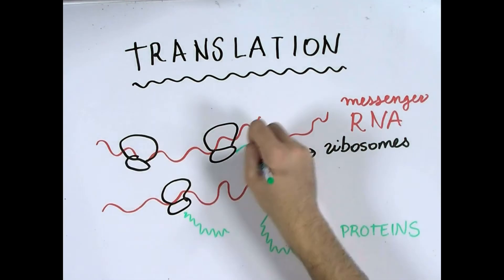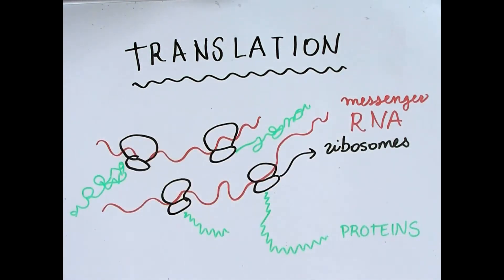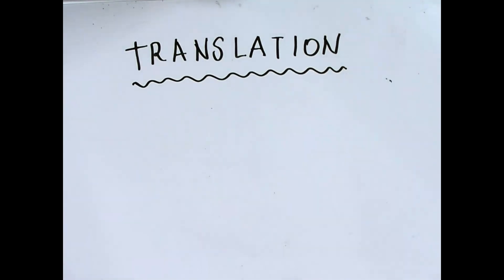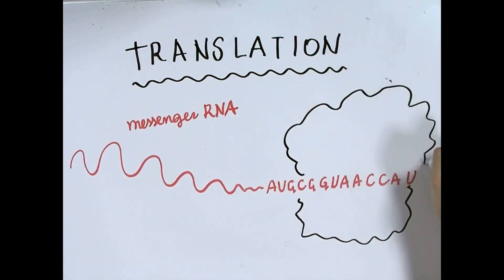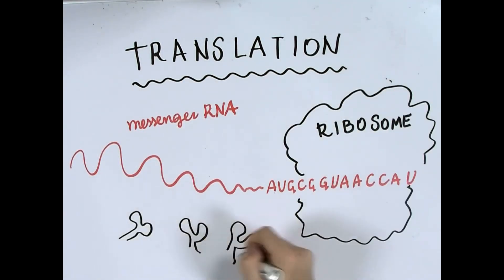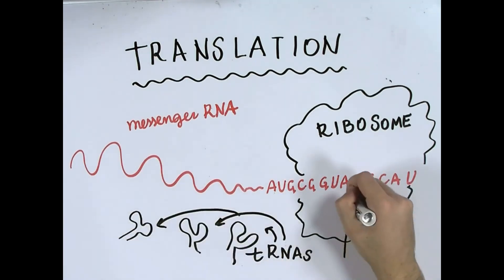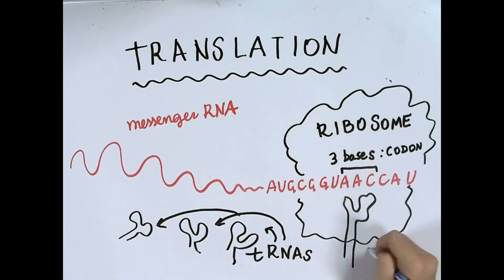Ribosomes help to decode an mRNA sequence by inducing the binding of specific molecules known as tRNAs with complementary anticodon sequences to that of mRNA. A codon is a 3-nucleotide long sequence of DNA or RNA that encodes for a specific amino acid or for the stop or start of a polypeptide sequence.